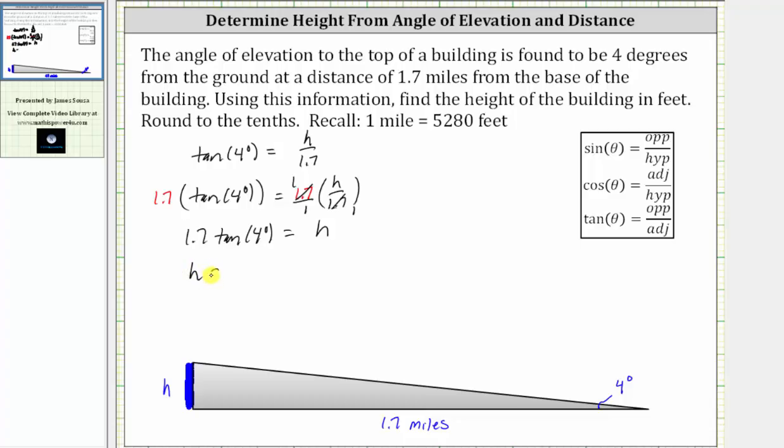So now we know the height H is equal to 1.7 times tangent 4 degrees, but the units here would be in miles. And again, we're asked to find the height in feet. And since 1 mile is equal to 5,280 feet, the height in feet is equal to 1.7 times tangent 4 degrees times 5,280 feet.